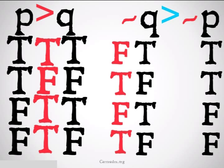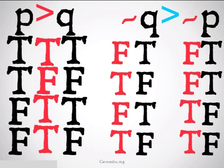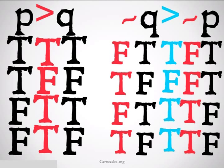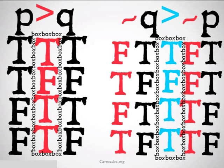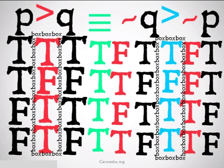We do the same for the statement on the right, filling in the truth values for P and Q, filling in their negations — just flip-flopping the true and false values — and finally filling in the implication once again, remembering the only time an implication is false is when the first is true and the second is false. Then we're going to take a look at comparing these two sets of truth values using a material equivalence sign. We're going to see that they are all the same, so the material equivalence is always true. Therefore, these two statements are logically equivalent and can be switched out for each other, salvo veritate, keeping the truth value.